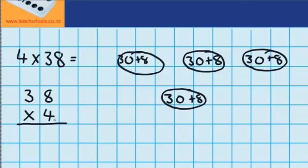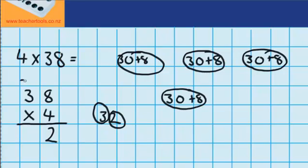The first thing I want to do is work out what four groups of 8 would be. So you can see here are my four groups and I'm working out what 4 times 8 would be. The answer is 32 — you can see that 32 is made up of 2 ones and 3 tens. So I put my 2 ones here, and over in the tens column this is where I need to put that 3, so I put a little 3 up there.